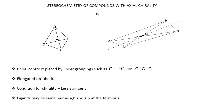Let us discuss the stereochemistry of compounds with axial chirality under R and S configuration. Molecules with a chiral center will have four different ligands around the chiral center. Such molecules are usually referred to as dissymmetric molecules.